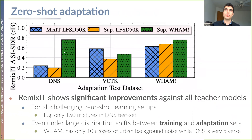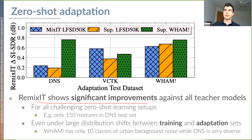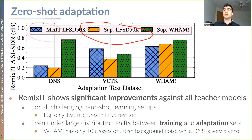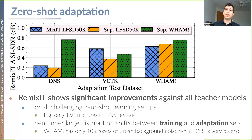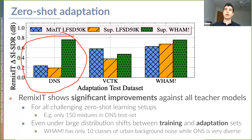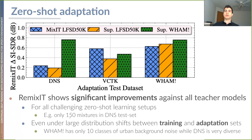For the last experiment, we show that we can perform zero-shot domain adaptation across different adaptation test datasets. We see that Remixit shows significant improvements against all of the teacher models used here. This also holds for really challenging zero-shot learning setups such as the DNS challenge test set, where we only have around 150 mixtures — a really low-resource dataset.